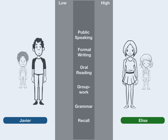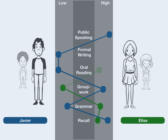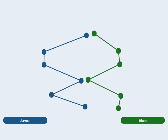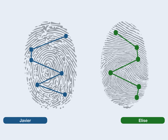For example, a student who is good at recalling facts may not have an affinity for grammar. He might flourish in small groups while feeling daunted by reading aloud. Like the singularity of a fingerprint, each student has a unique way of learning.